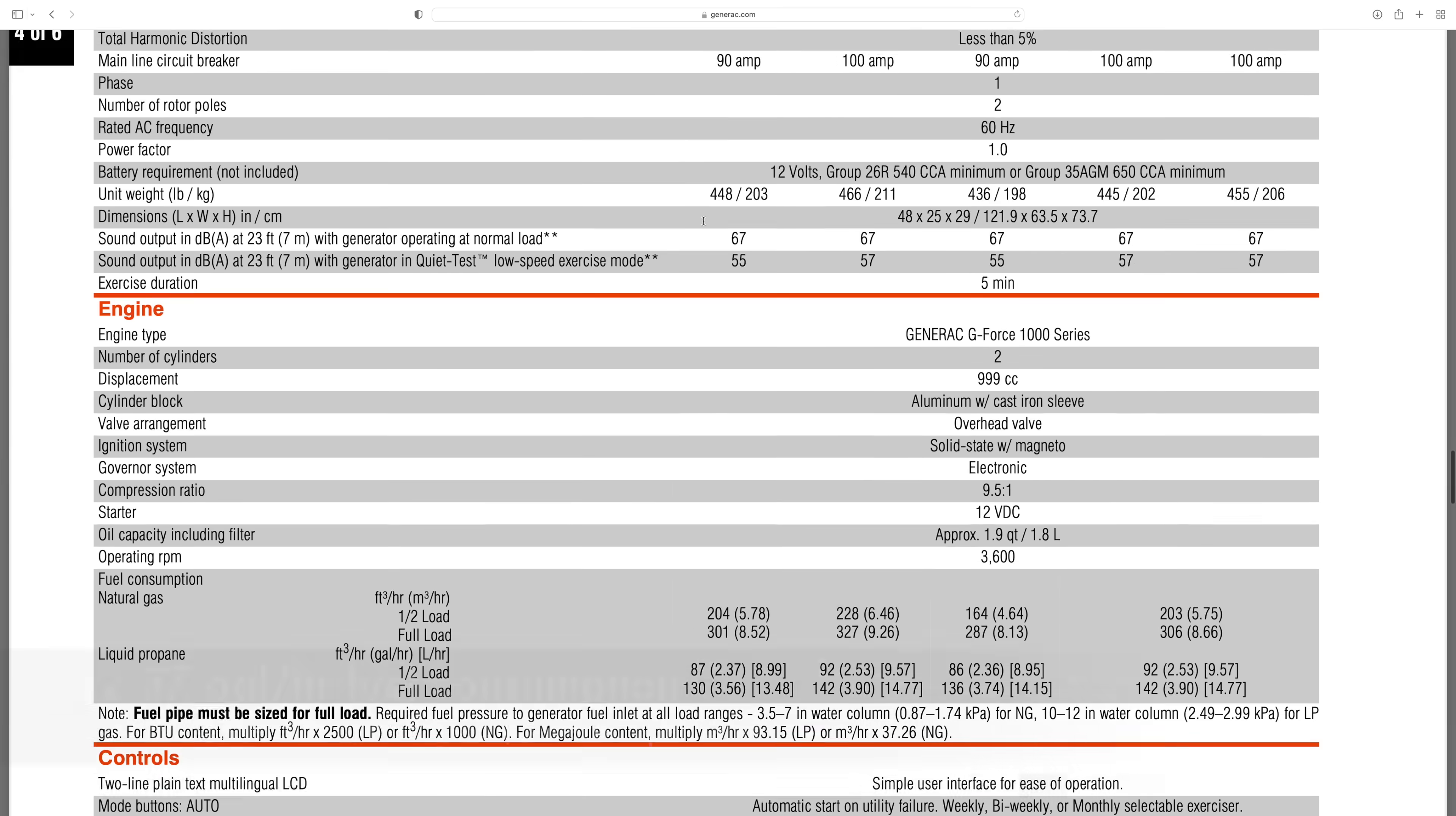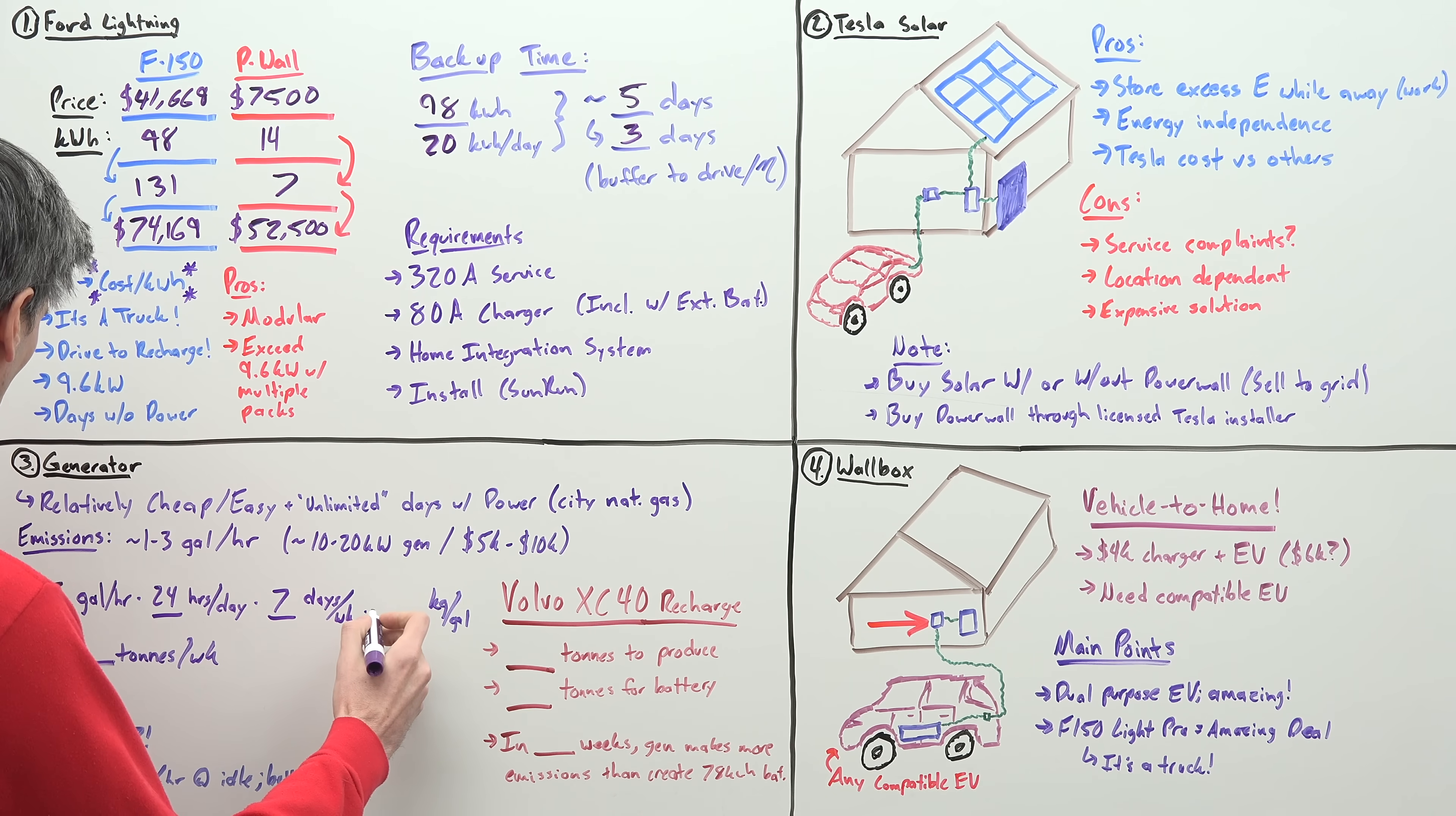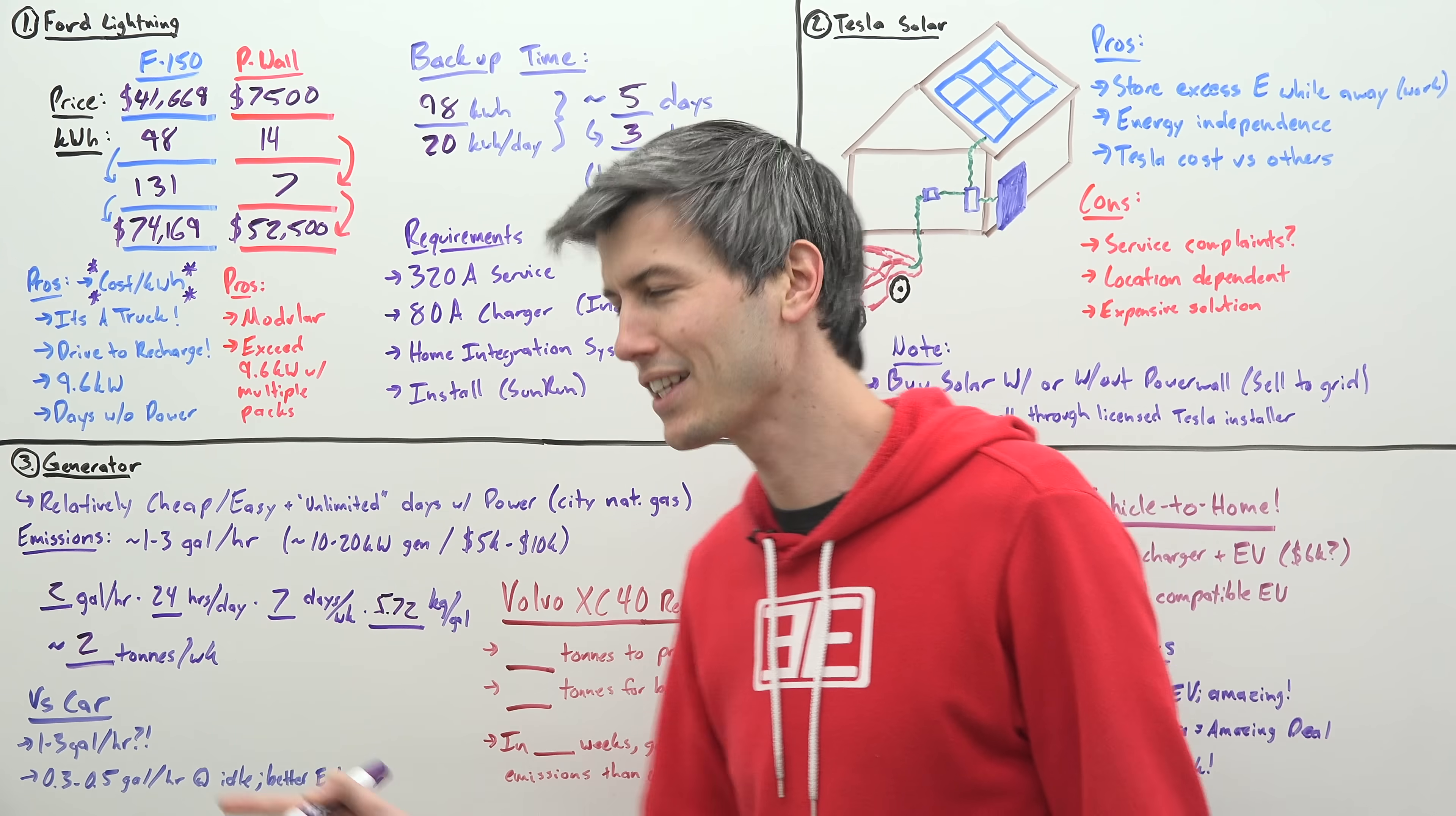Again, pricing on this is going to be in the $5,000 to $10,000 range. So let's just say two gallons an hour for 24 hours a day for seven days. Let's say we lost power for a week. What are our emissions for that week that we lost power? We're running propane, two gallons an hour, 24 hours a day, seven days a week. There are 5.72 kilograms of CO2 per gallon burned, which gives us about two tons, two metric tons. I know the units are messier. Two metric tons of carbon dioxide per week running this generator.